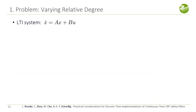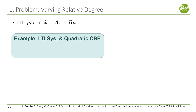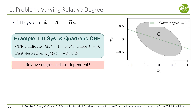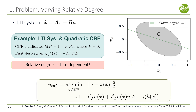Finally, we present the third example. In this example, we have a linear system with a quadratic CBF. In this case, the relative degree is state dependent and there is a line of states where the relative degree is not equal to one. For those states, the control input has no effect on the condition and arbitrary inputs can be certified.